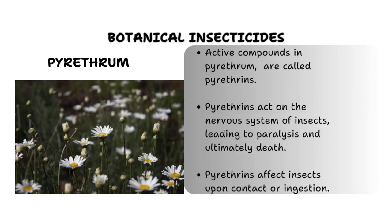Pyrethrum contains natural insecticidal compounds known as pyrethrins, which effectively control whiteflies. When applied, pyrethrum disrupts the nervous system of whiteflies, leading to paralysis and eventual death. It acts quickly upon contact and has a relatively low toxicity to mammals, making it a preferred option for organic and environmentally conscious pest management. Pyrethrum-based products are available in various formulations including sprays and dust, and are very affordable and highly available, especially in Kenya where pyrethrum is locally grown.